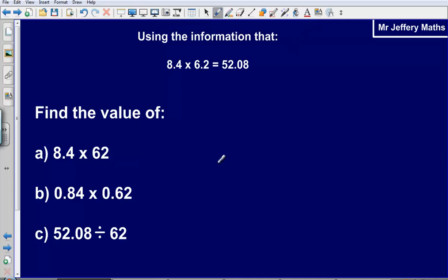Find the value of 8.4 multiplied by 62, given the information that 8.4 times 6.2 equals 52.08. So we can see 6.2 has just been multiplied by 10 to give us that answer. So our answer here is going to be 10 times as much, which would be 520.8.